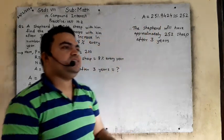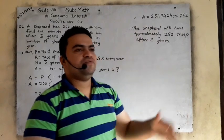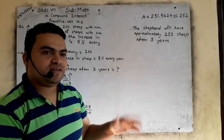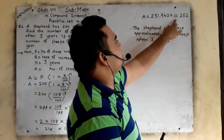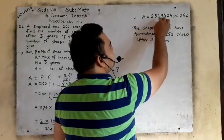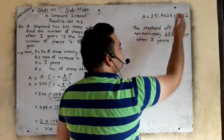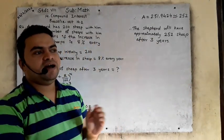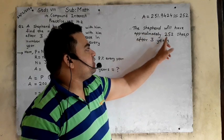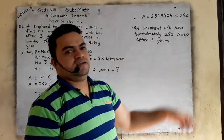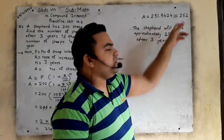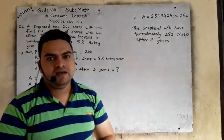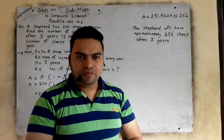So, how many sheep does the shepherd have? 251.9424 — it is not possible to have a fraction of a sheep. So what we will consider is approximate — takriban 252. We will make it approximate. 251.9424 can be considered as approximately 252. Therefore the shepherd will have approximately 252 sheep after 3 years. This symbol means approximately 252.